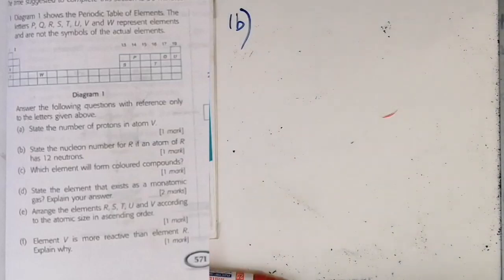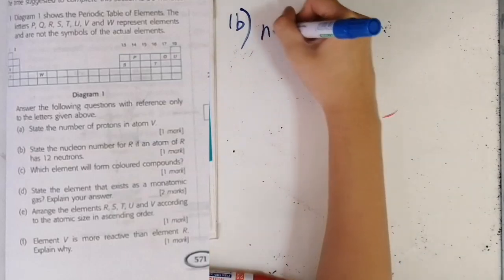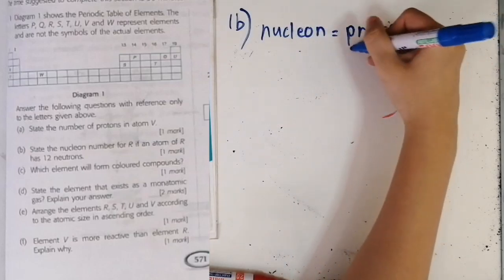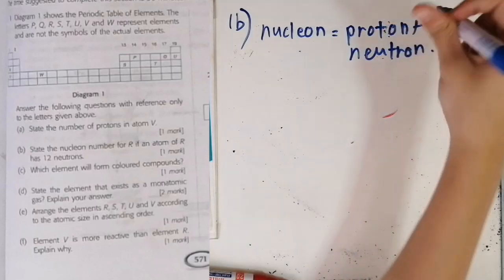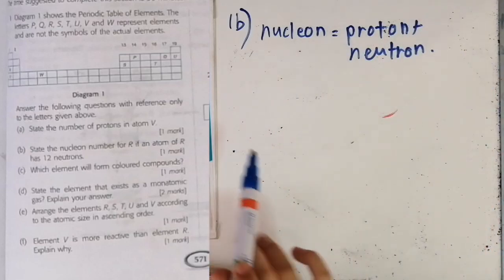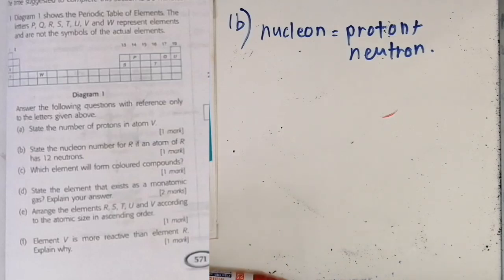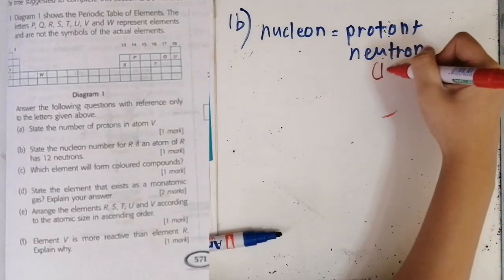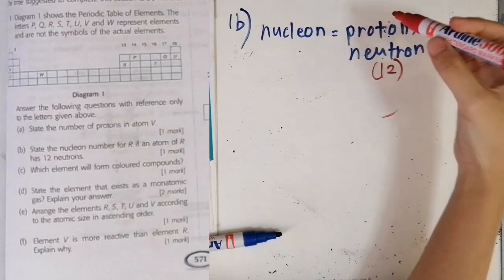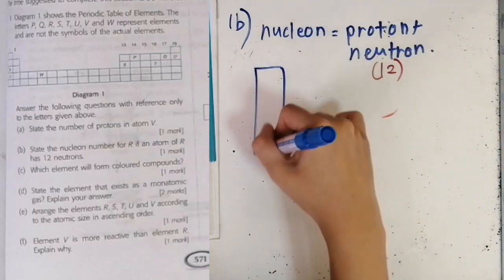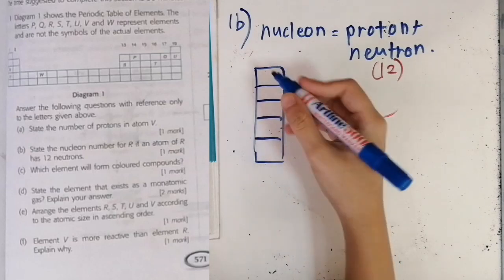Question 1b: state the nucleon number of R if an atom of R has 12 neutrons. First, you need to know what nucleon number is — nucleon number is the number of protons plus the number of neutrons. This can be asked in paper one and paper two. They've told you R has 12 neutrons, but you have to find the number of protons that R has. R is from group one and is positioned here.